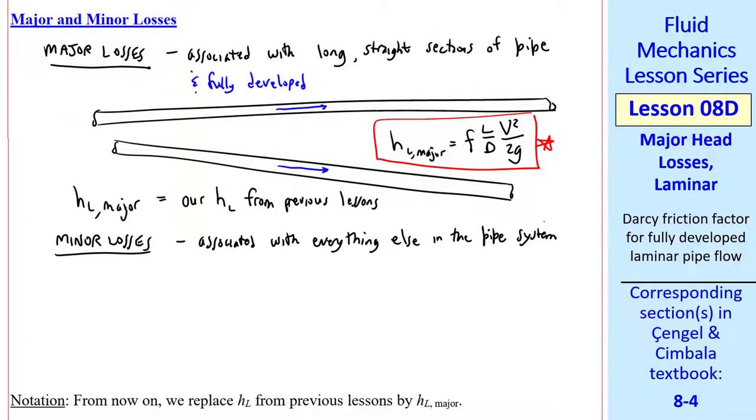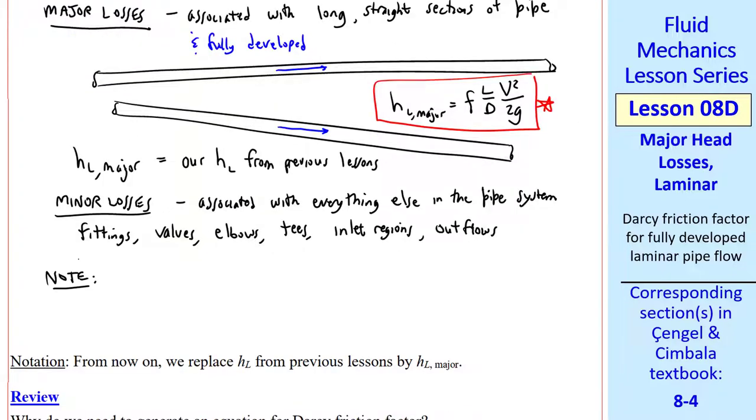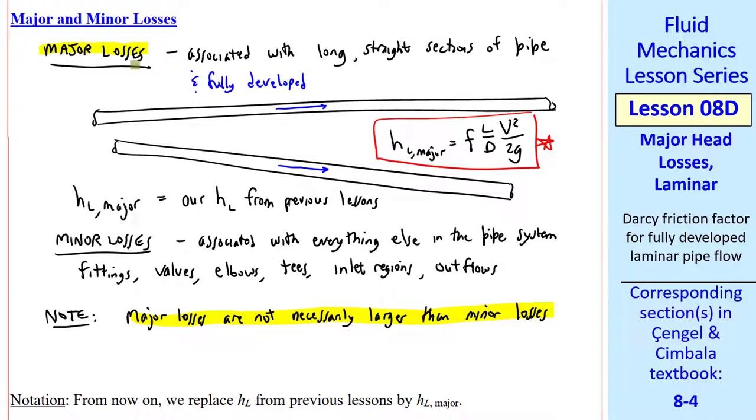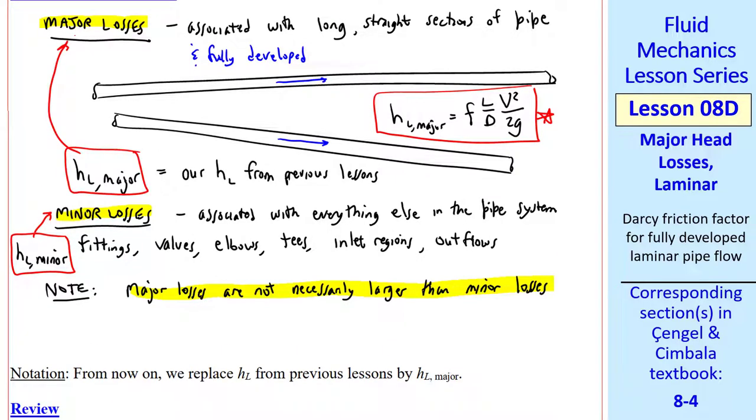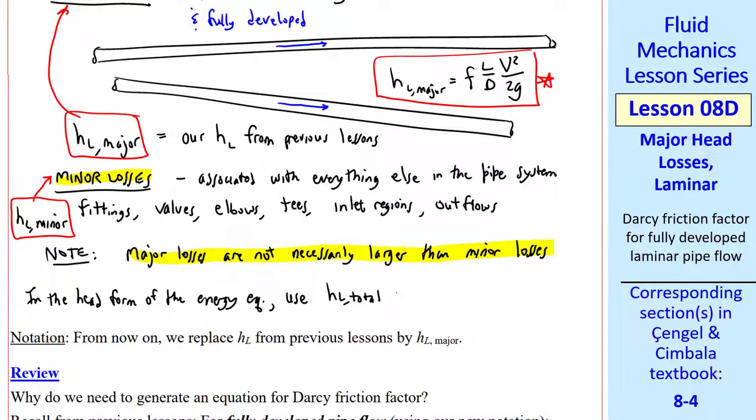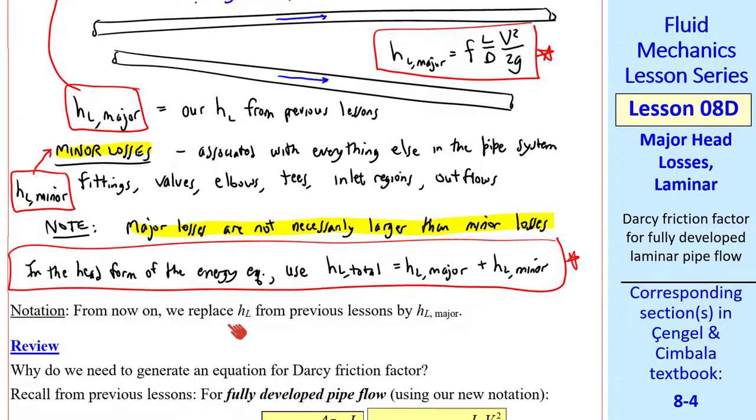Minor losses are those associated with everything else in the pipe system, such as fittings, valves, elbows, tees, inlet or entrance regions where the flow is not yet fully developed, and outflows depending on how we define our control volume. Note that despite the terminology, major losses are not necessarily larger than minor losses. In the head form of the energy equation, we use HL total, which is the sum of HL major plus HL minor.